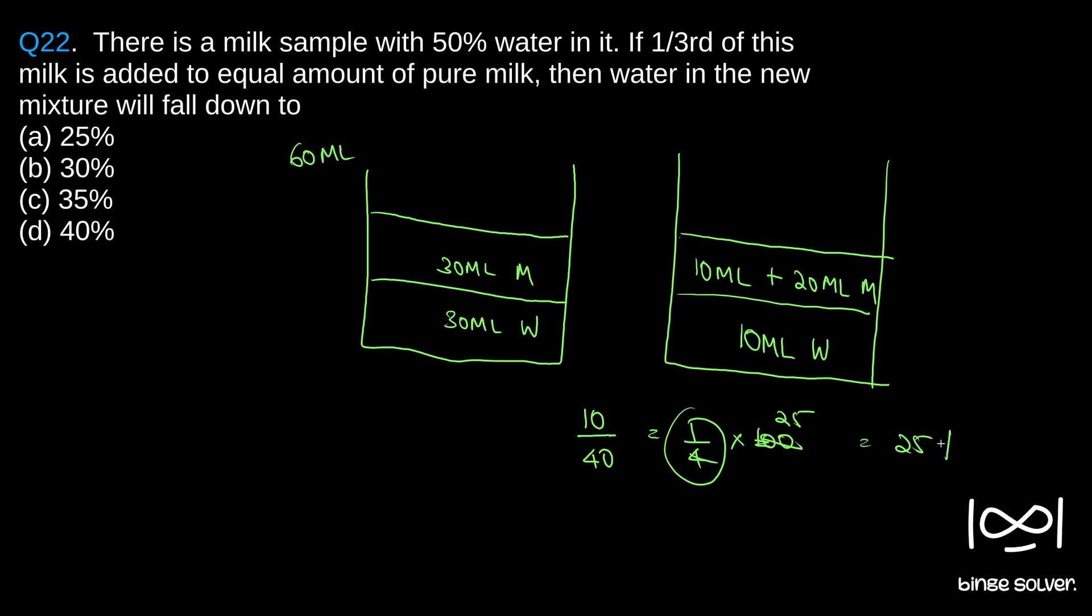So it is 25%. So ratio of the water in the new mixture will fall down to 25%. That is the answer. So a is the answer. Solution to question 22 is a, 25%.